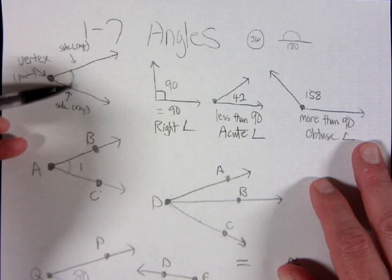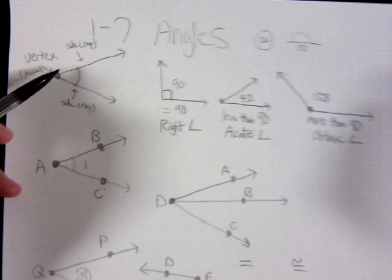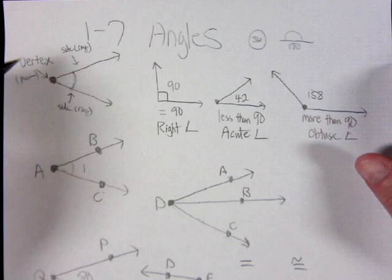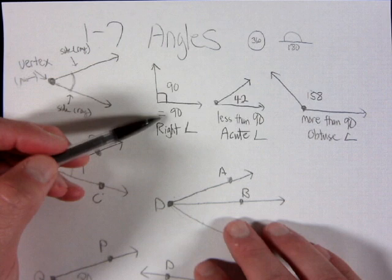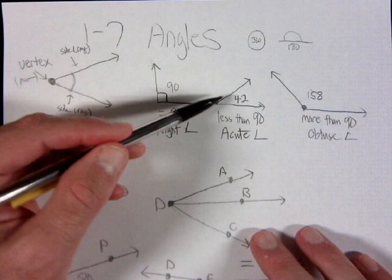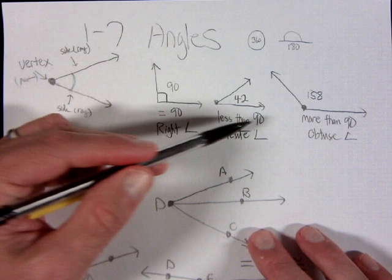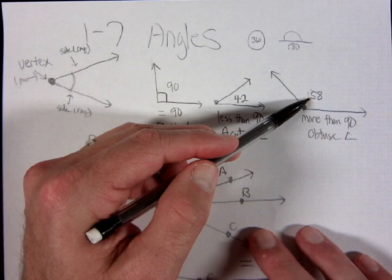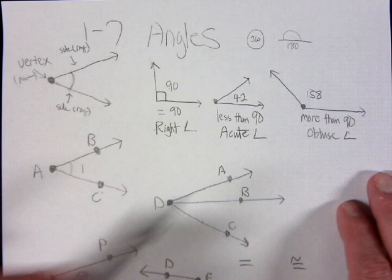Angles are measured in degrees. Degrees is not a straight measure like measuring how long a segment is — degrees are a rounded measure that measures an angle. Angles can be classified by their measure: 90 degrees is a right angle, less than 90 degrees (like 42) is an acute angle, and more than 90 degrees (like 158) is an obtuse angle.